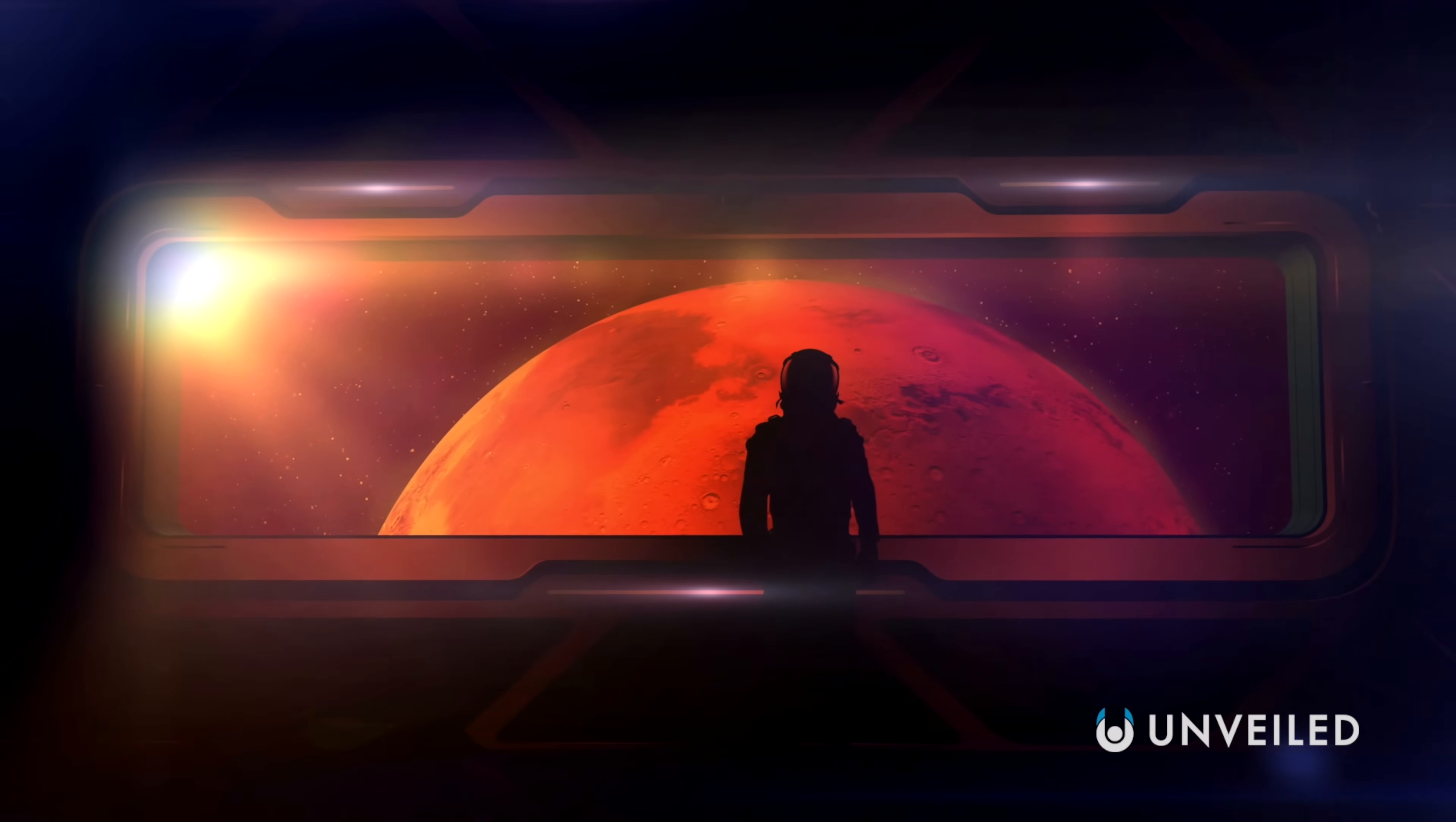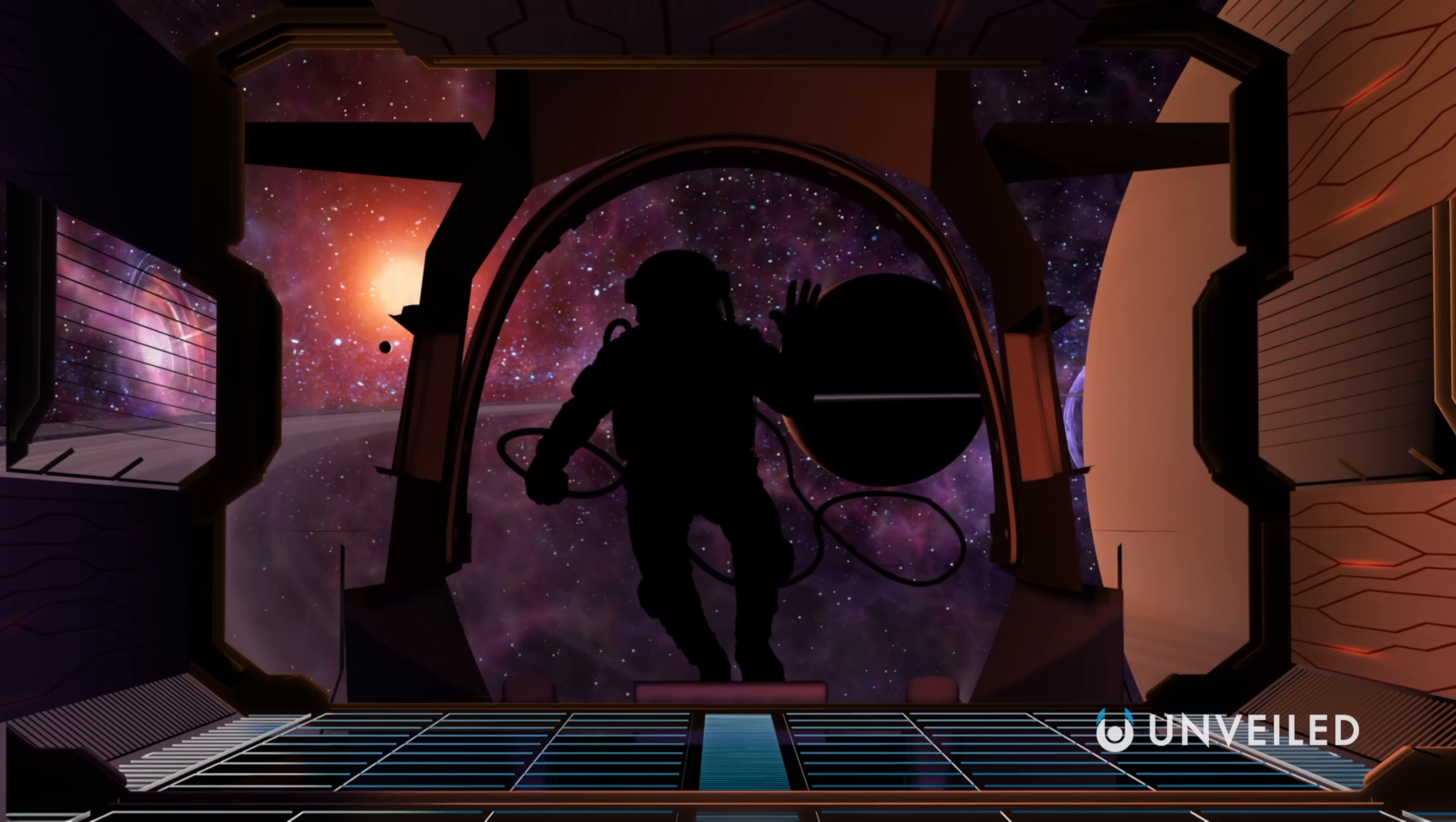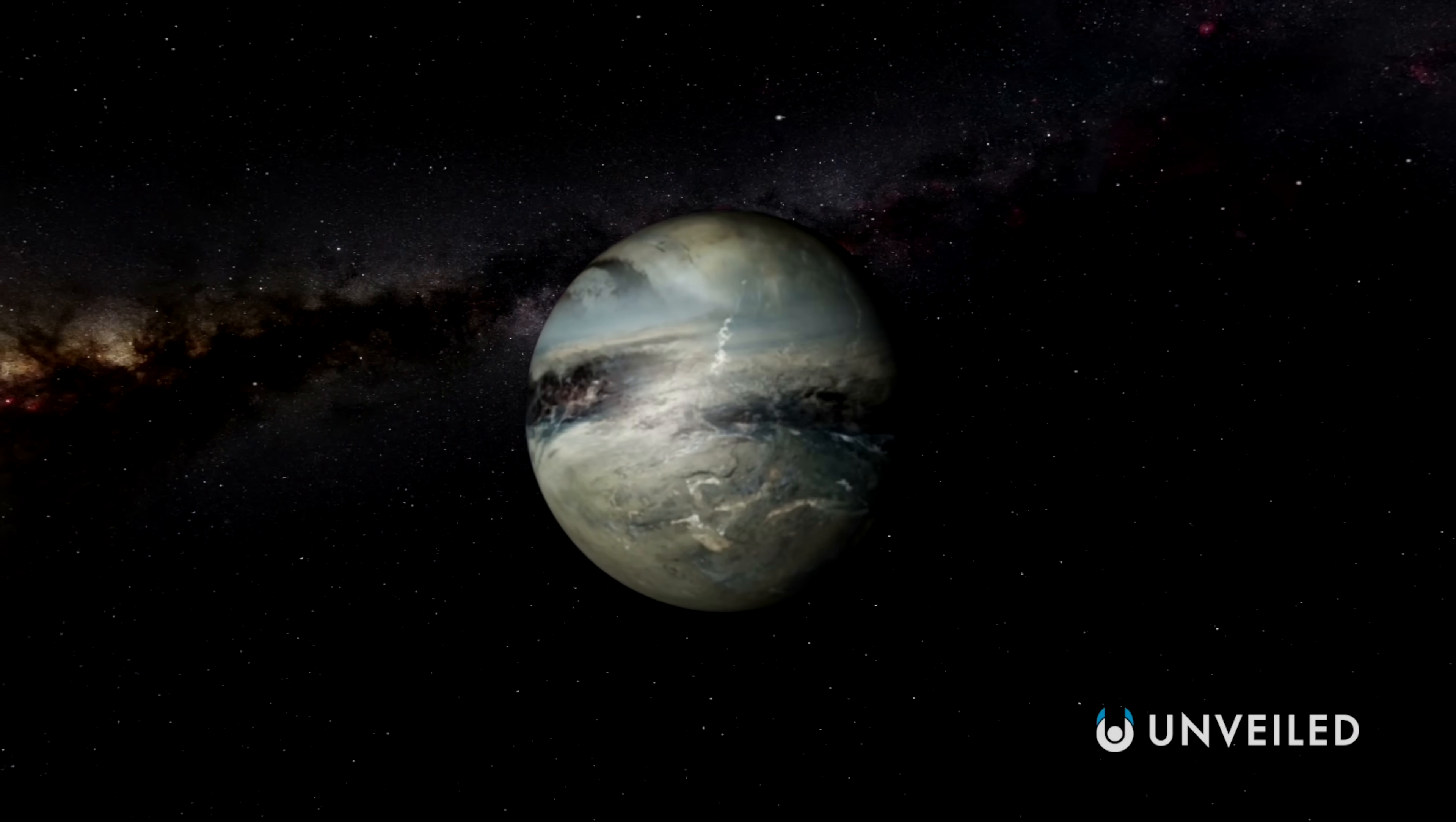It would take astronauts roughly seven months to reach Mars with current technology, a journey that exposes them to mental illness, physical degradation in microgravity, and dangerous radiation. But Mars is only about twelve and a half light minutes away from us on Earth on average. At the speed of light, the commute to Mars would be completely trivial, with people able to go there and come back many times a day. Even distant Pluto would be within reach, with an average journey time of five and a half hours at light speed.